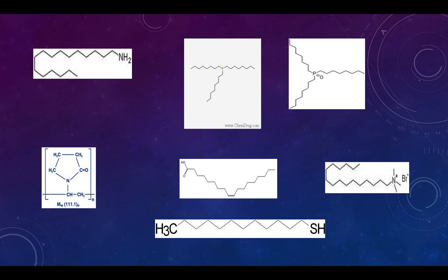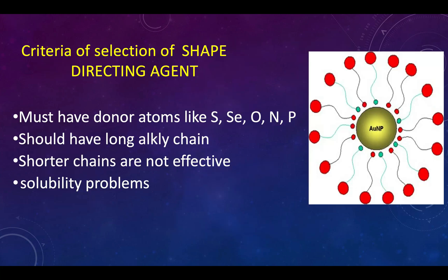Common shape-directing and capping agents include amines and polymers, all of which contain coordinating atoms. The general criteria for selecting a shape-directing agent: they must have donor atoms — in chemistry these are atoms with lone pairs — such as sulfur, selenium, oxygen, nitrogen, and phosphorus. They must also have a long alkyl chain; shorter chains are not effective because they create dispersion problems.